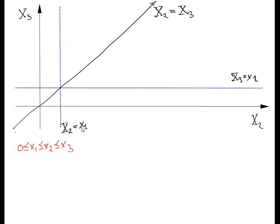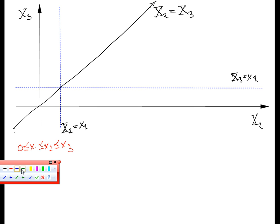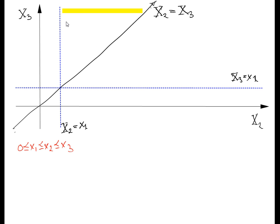Since x2 has to be bigger than or equal to x1, we go to the right of x2 equal to x1. Since x3 has to be bigger than or equal to x1, we go above that boundary as well. So we have to be above both of these boundaries, which means we integrate over the region above both constraints.